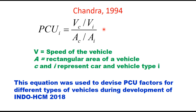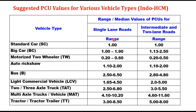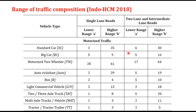Since PCU depends upon the speed of a vehicle type with respect to a car, and speed is influenced by geometry, traffic composition, traffic volume, and many other factors, the Indian Highway Capacity Manual provides a table with a range of PCU factors for each vehicle type. These are examples taken from the manual: for a single-lane road, one set of PCU factors, and for intermediate and two-lane roads, another set. For each vehicle type, PCU is given as a range, not a constant value, and the manual also provides interpolation procedures.